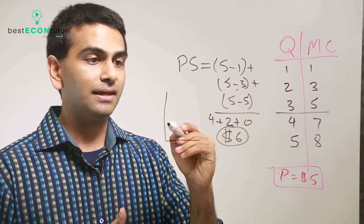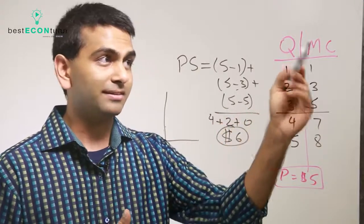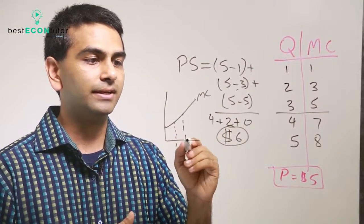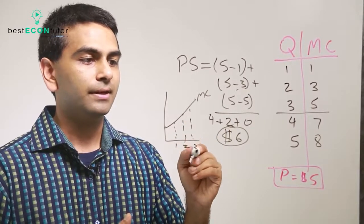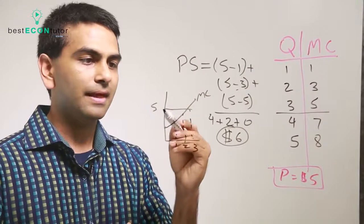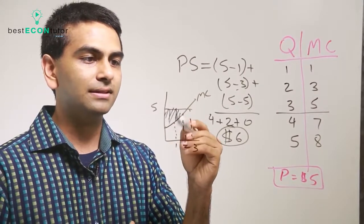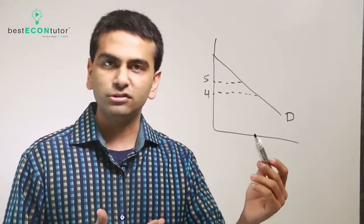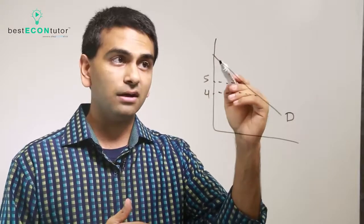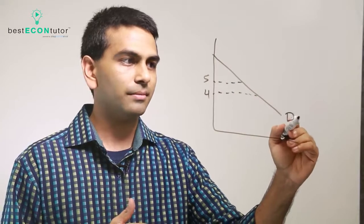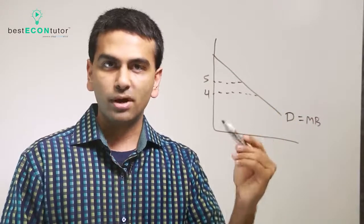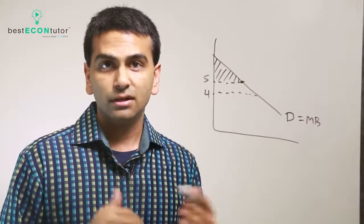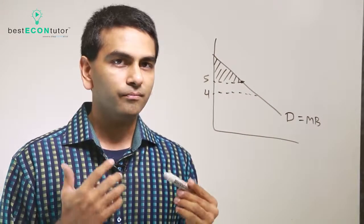You could plot this — that would be the supply curve, because the marginal cost curve is the supply curve. If you plot the different costs for each item, that difference between price and marginal cost, added up across units, is the producer surplus. Similarly, consumer surplus is the area underneath the demand curve — or marginal benefit curve — and above the price you pay. If the price is $5, that area is a good estimate of consumer surplus.